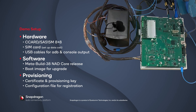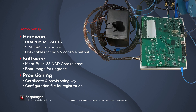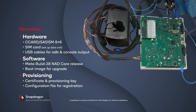This slide shows the demo setup. On the right in the photo, you see the C card — a Snapdragon Auto 5G Modem RF 8 plus 8 interposer with a SIM card inserted to set up the data call. There are USB cables for ADB and console output. For software, the MetaBuild 38 NAD core release is flashed along with the boot image to upgrade. To provision the device, there is a certificate, a provisioning key, and configuration files for registration.